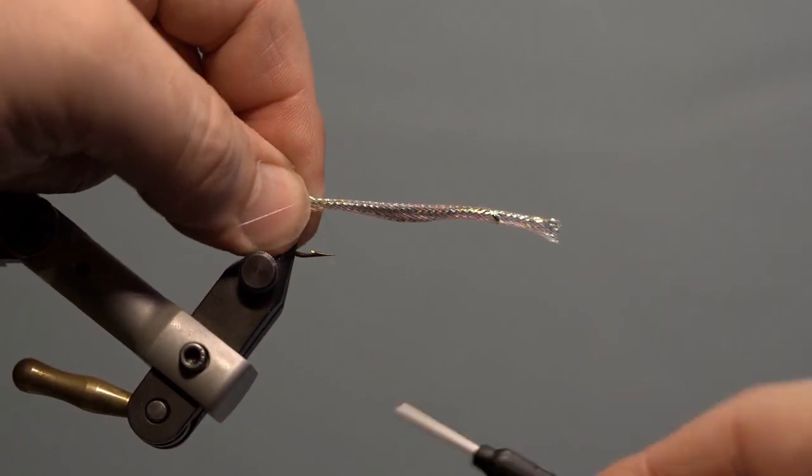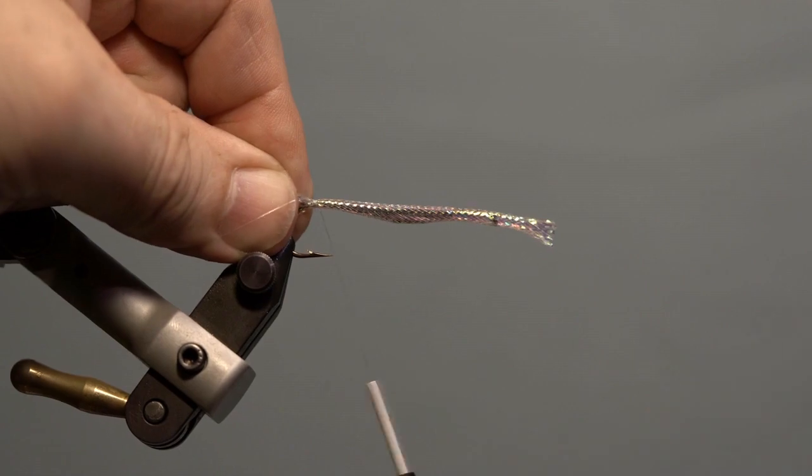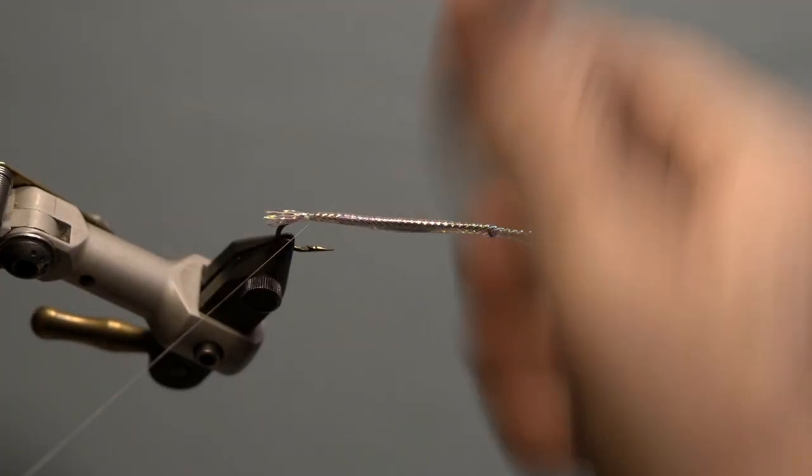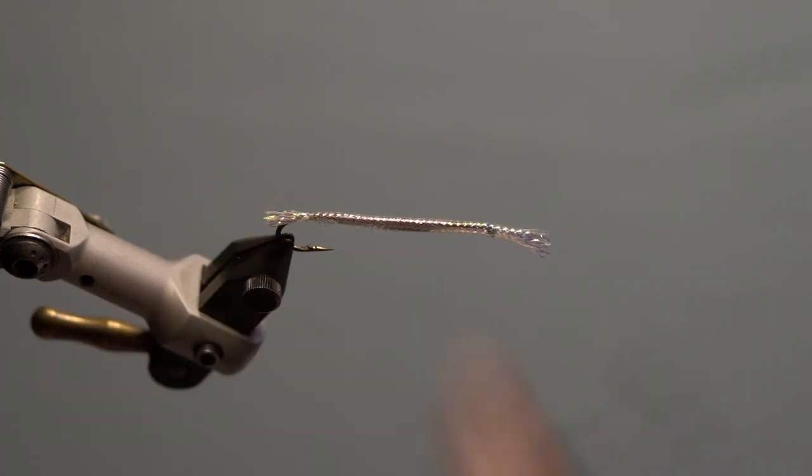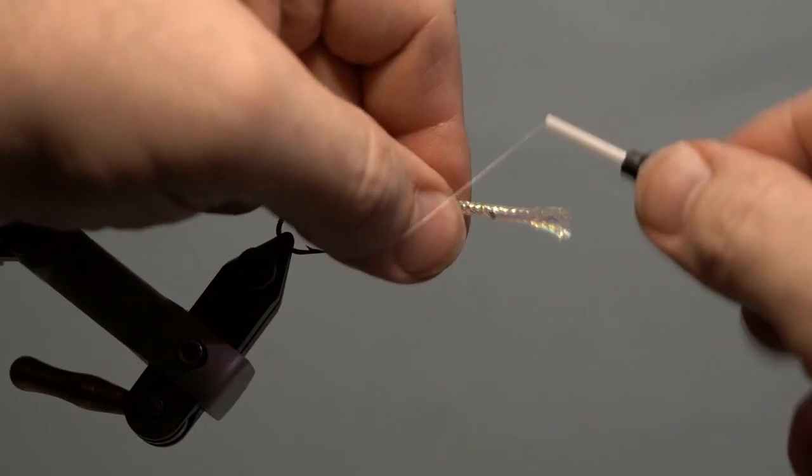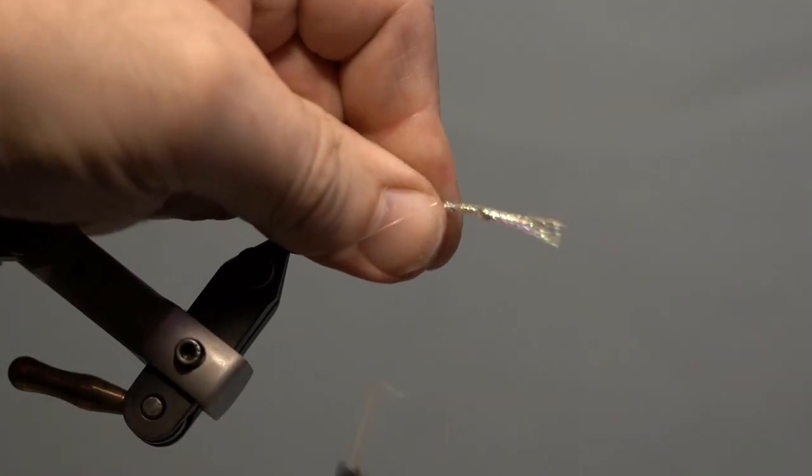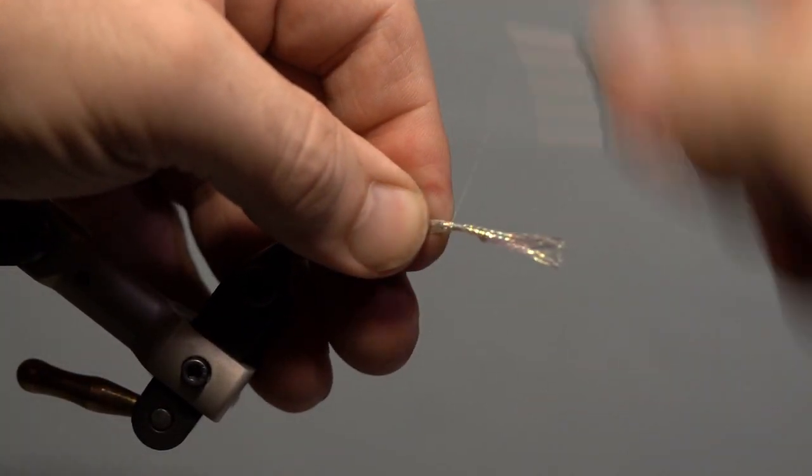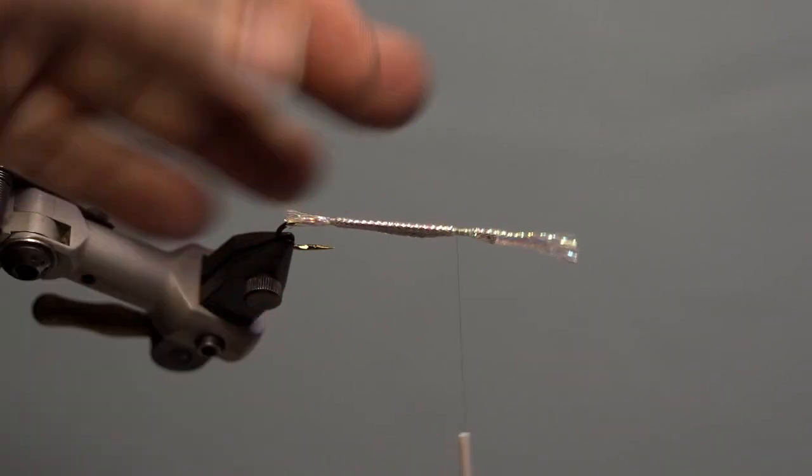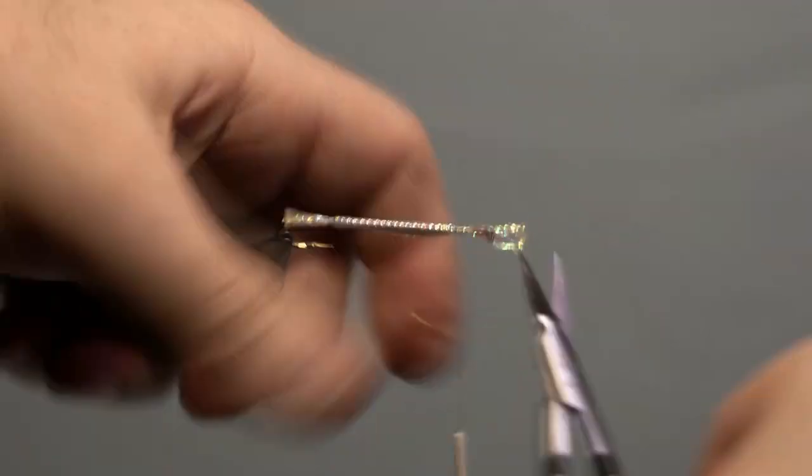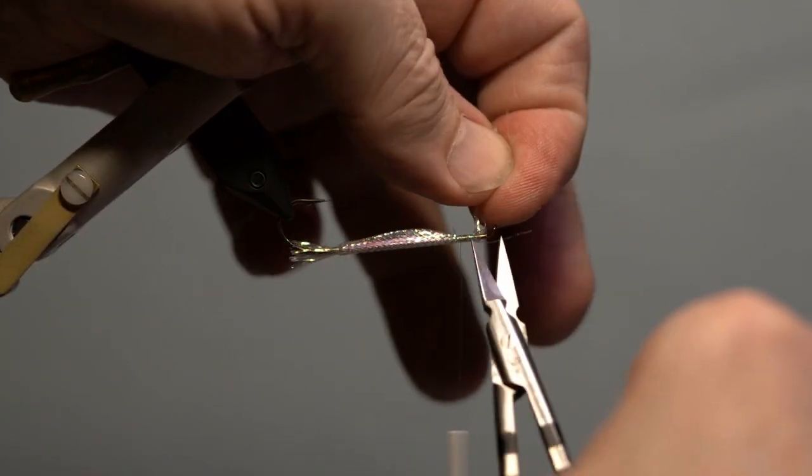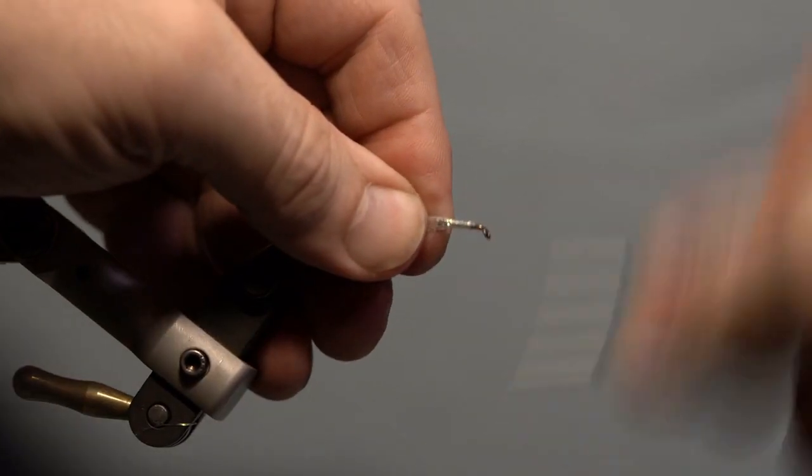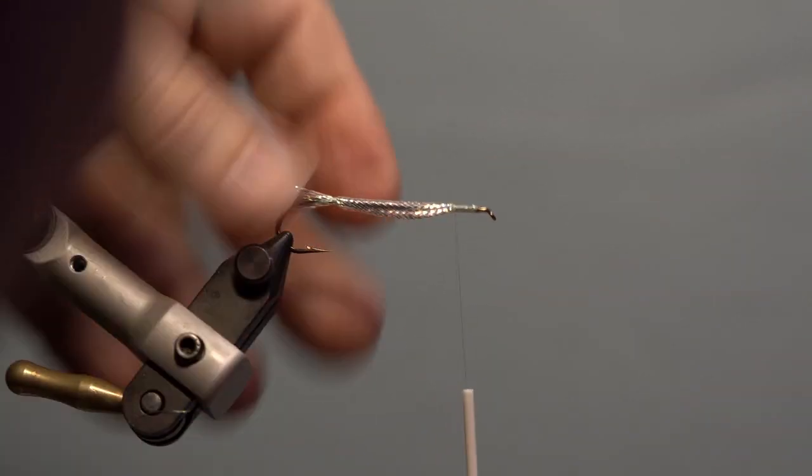The thread I'm using to secure the back section of the hook and the entire fly is Semperfly NanoSilk 18 knot white. Secure the mylar behind the tape at the back of the hook with a dozen or so wraps, whip finish and trim. Next, secure the mylar in front of the tape, start the wrap, trim the tag and make a few wraps. Pull the mylar to stretch it over the tape, secure and trim any excess.